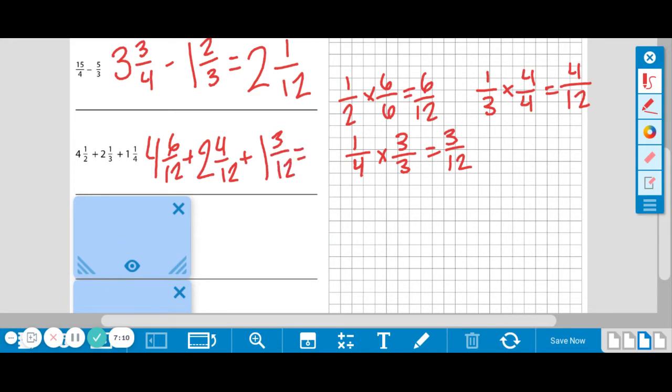Now we can add these all together. We're going to add our whole numbers first, and then we'll add our fractions together. So 4 plus 2 plus 1 equals 7. And then remember when adding fractions, when they have like denominators, which is what we just did, you only add the numerator or the top. So 6 plus 4 is 10, plus 3 more is 13. And our denominator stays the same.